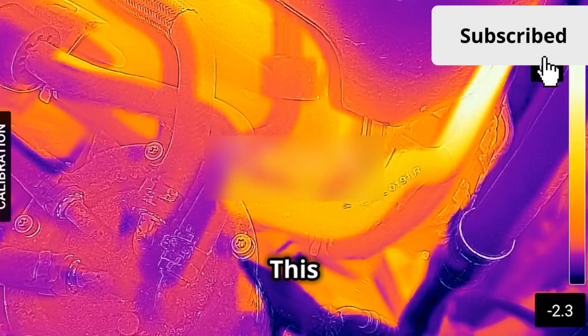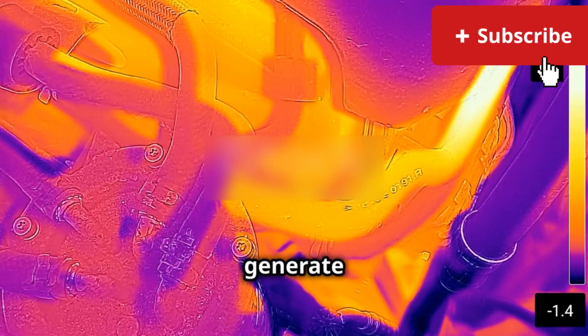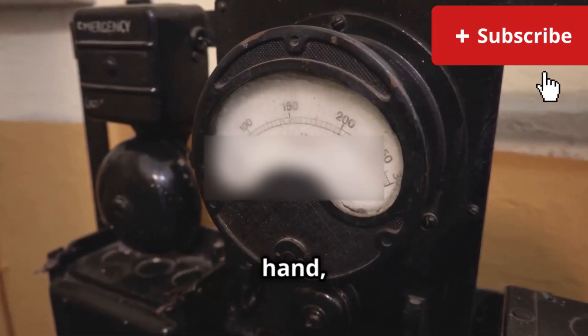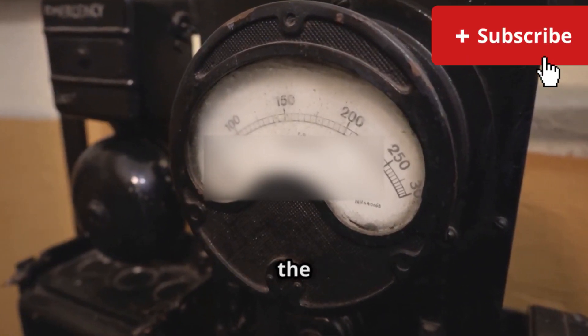On the other hand, when you decrease the voltage, the speed of the motor decreases and the current drawn by the motor also decreases. This means that the motor will produce less power but will also generate less heat.